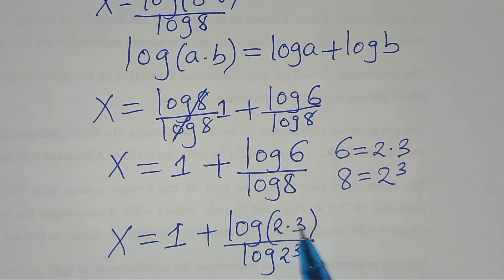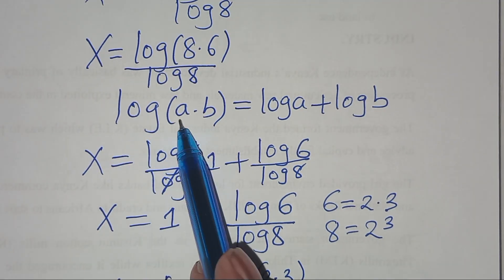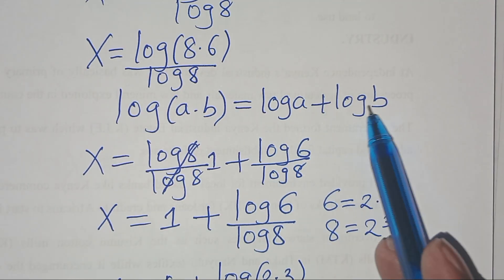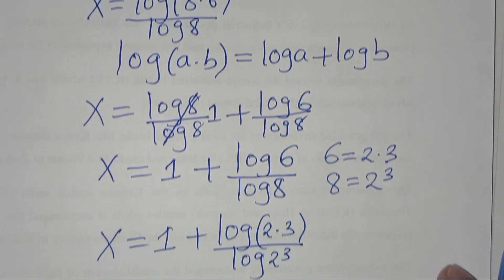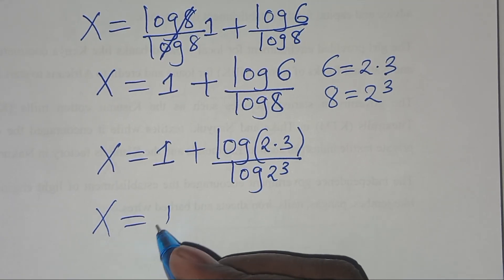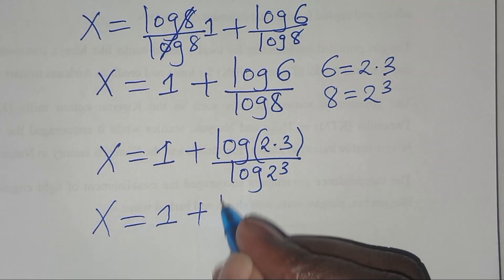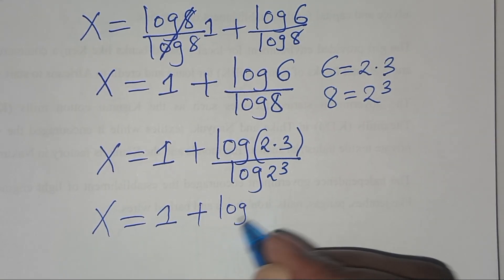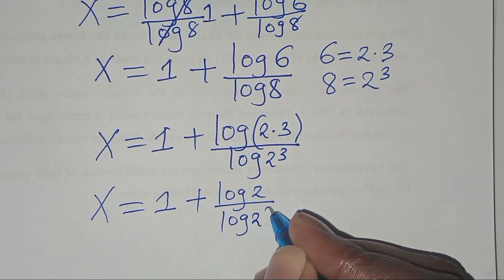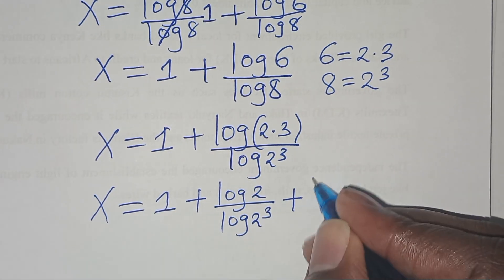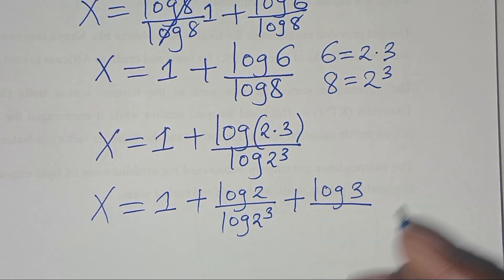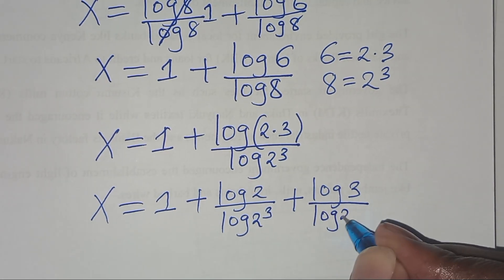Now, ln(2 × 3) is in the form of ln(a × b), which we can express as ln(a) + ln(b). So applying this, we have x is equal to 1 plus ln(2) divided by ln(2^3), plus ln(3) divided by ln(2^3).